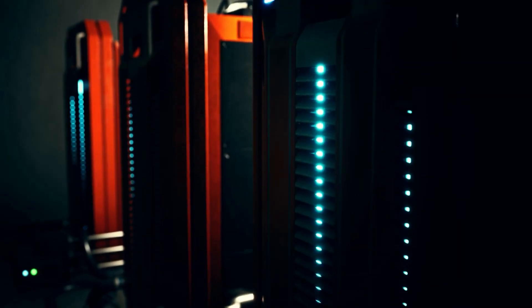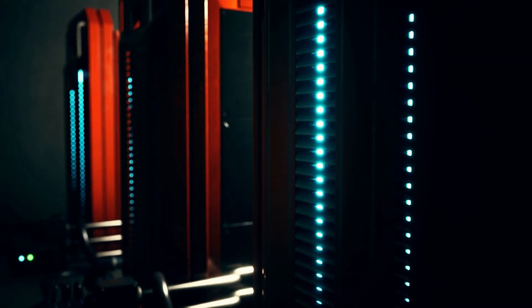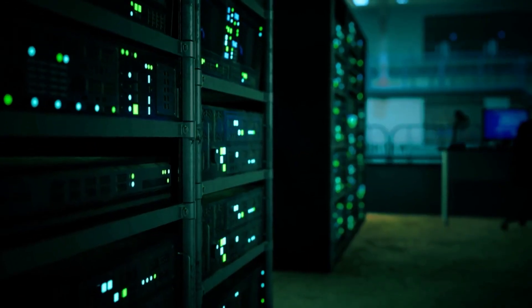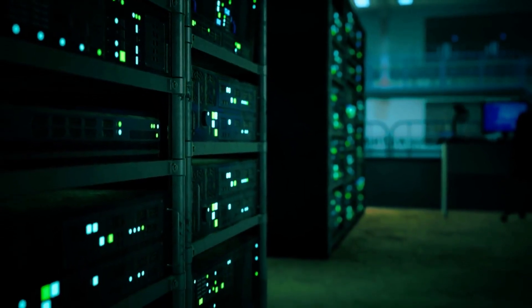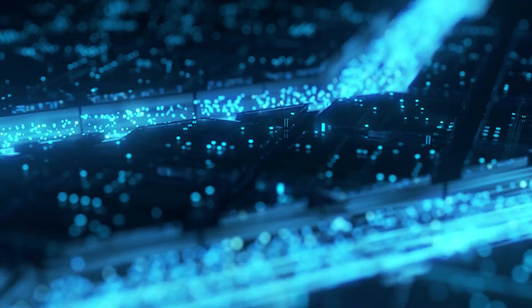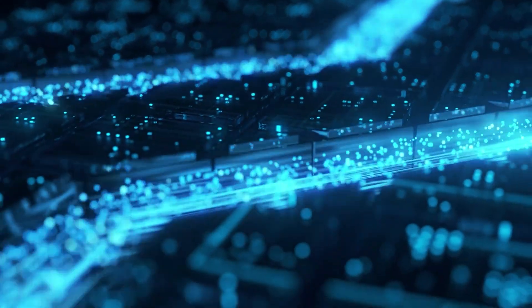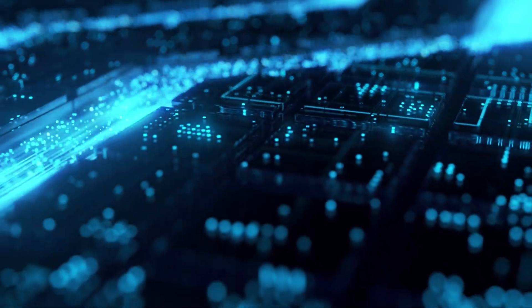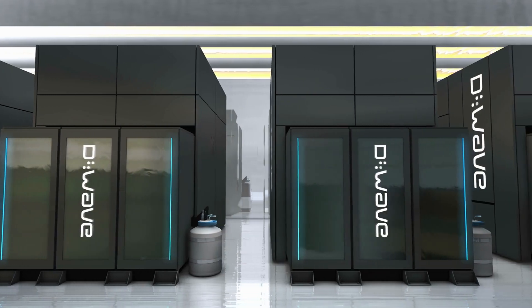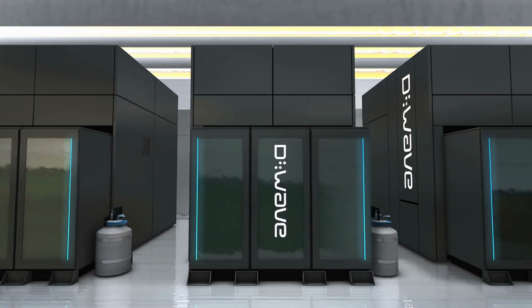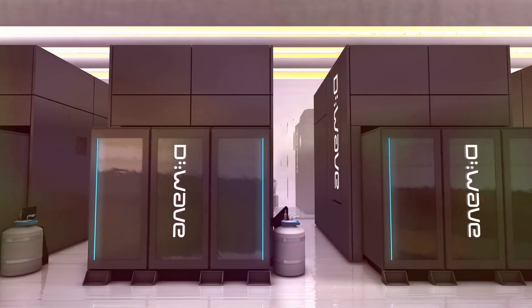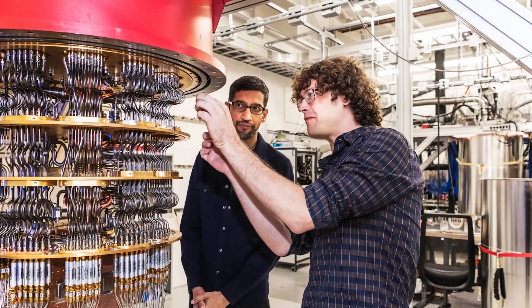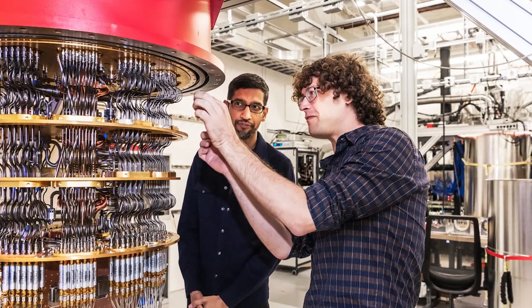Traditional computers struggle as more parts are added, often becoming slower or more prone to errors. But Willow flips this rule on its head. When Google added more qubits to the system, expanding it from a 3x3 to a larger 7x7 setup, it actually made fewer mistakes. In fact, the more they added, the more accurate it became. That kind of improvement has eluded researchers for over 30 years.